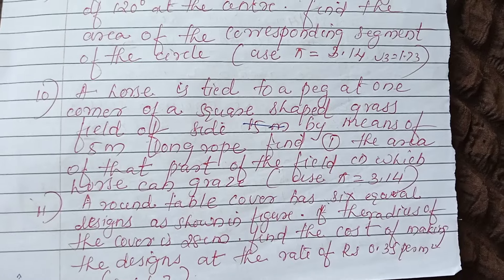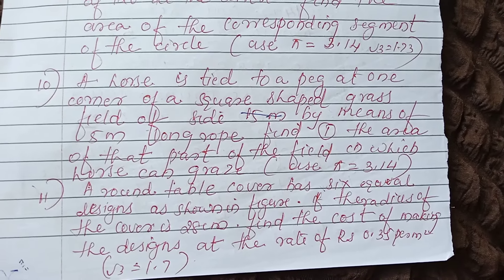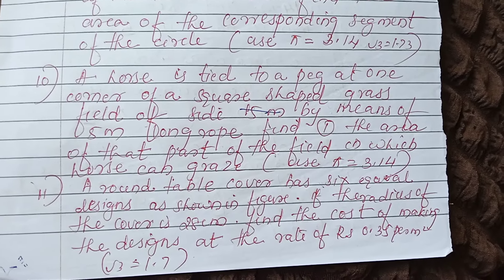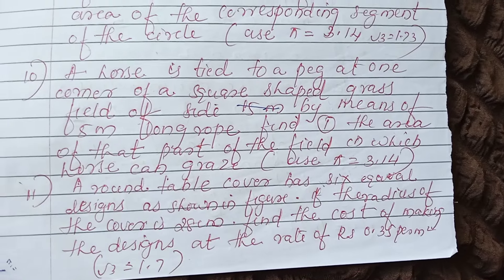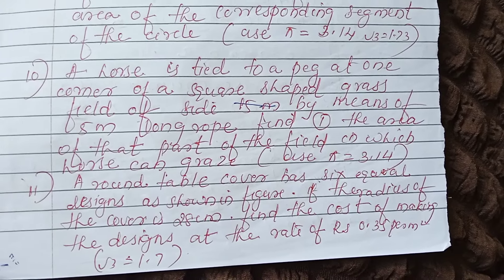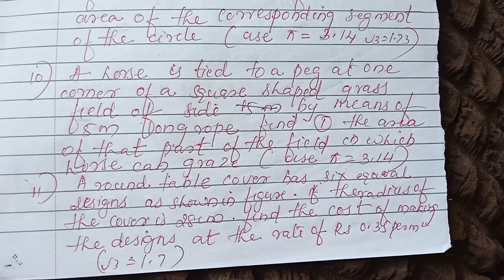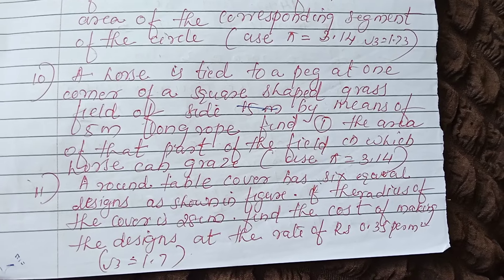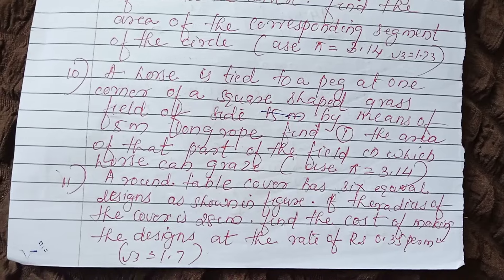The last and also important question: a round table cover has 6 equal designs as shown in the figure. The radius of the cover is 28 cm. Find the cost of making the design at the rate of Rs. 0.35 per square meter. These are the important questions.